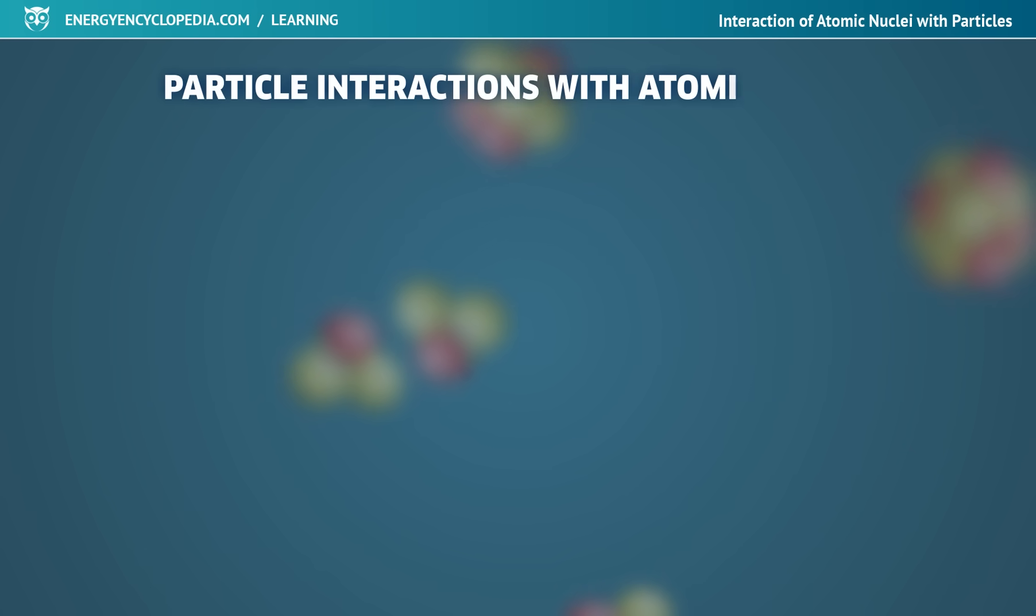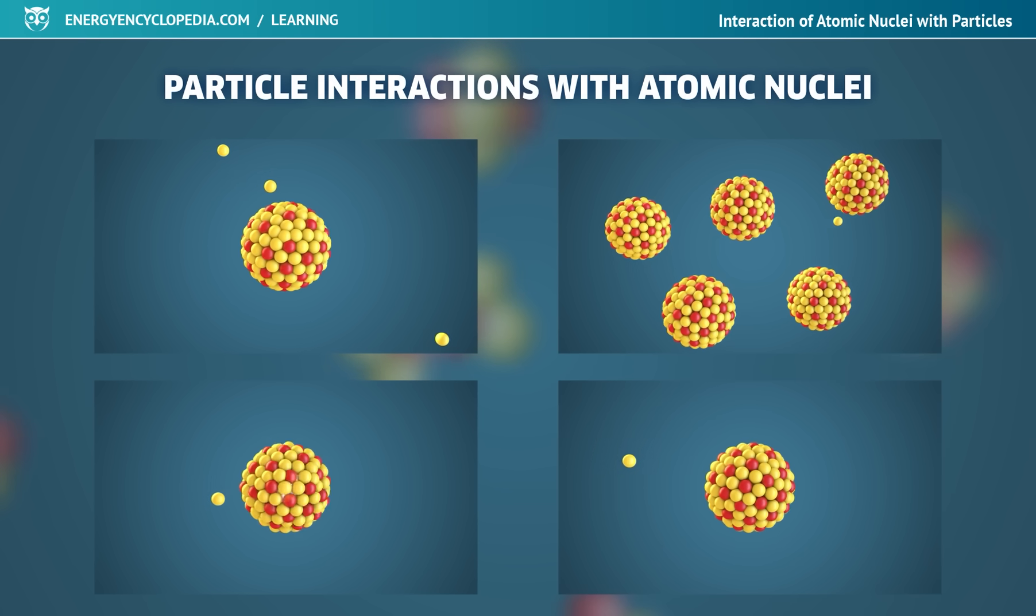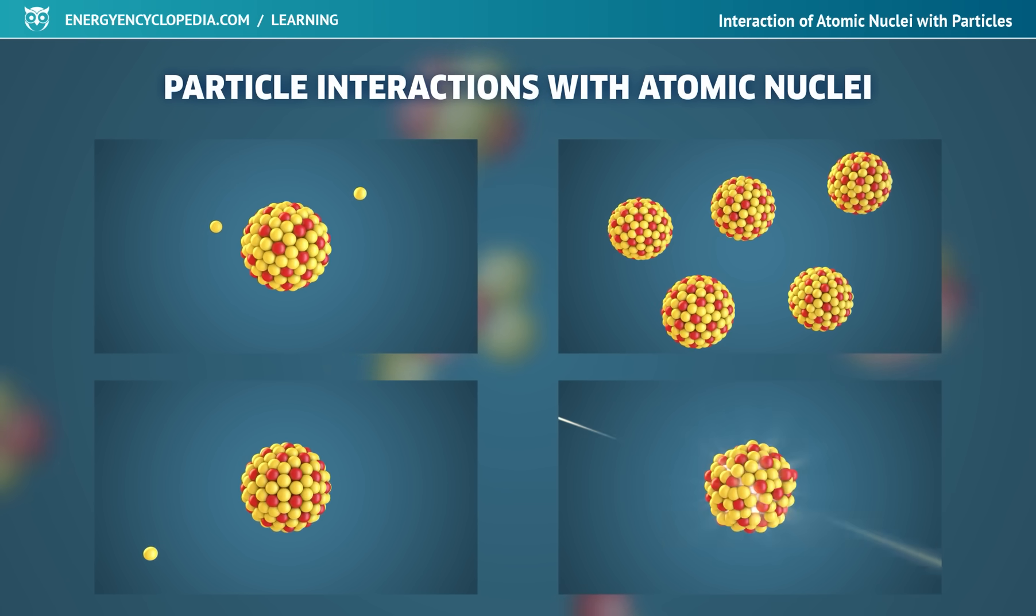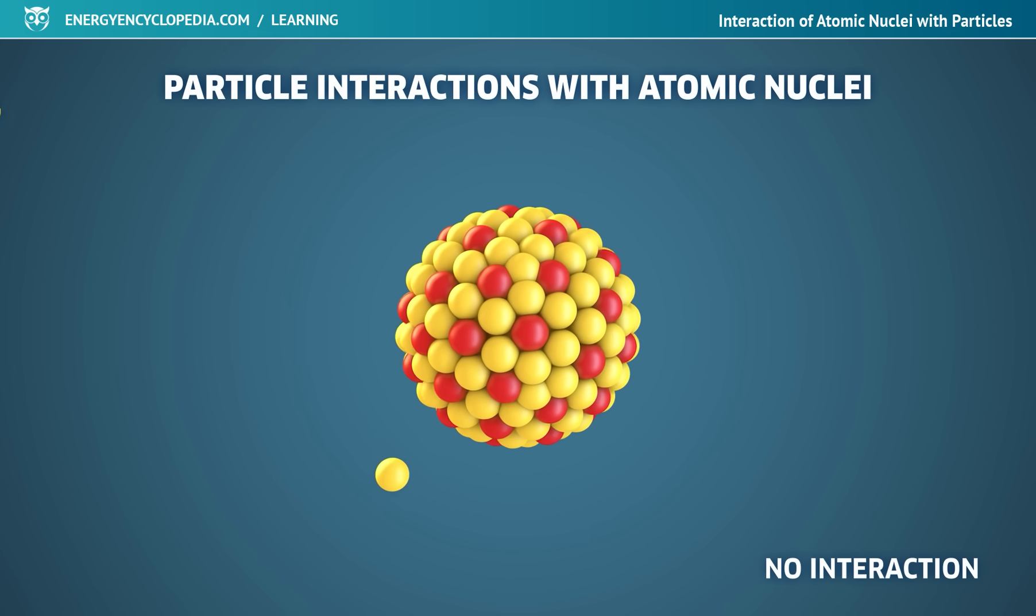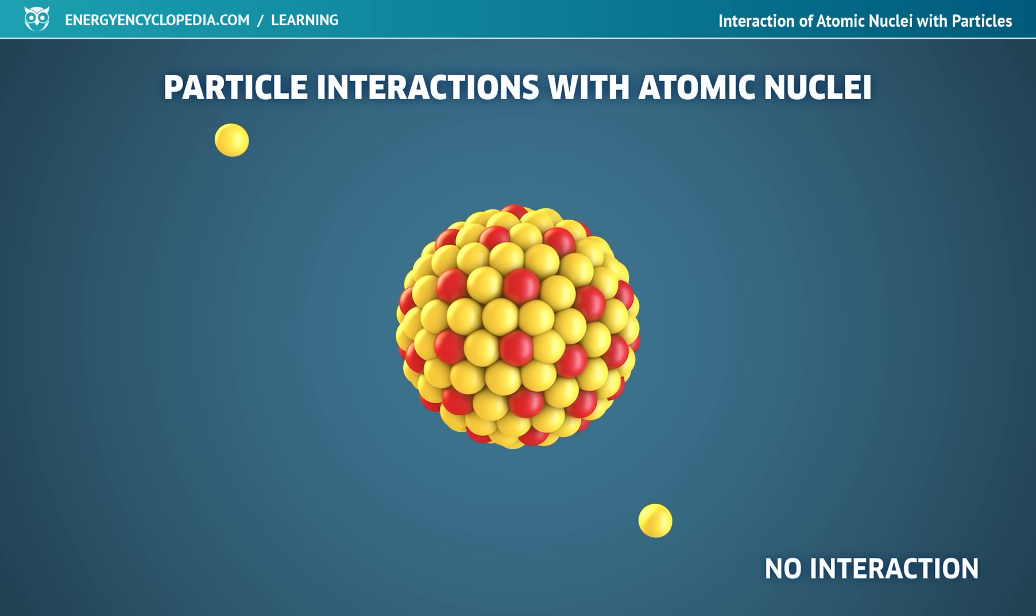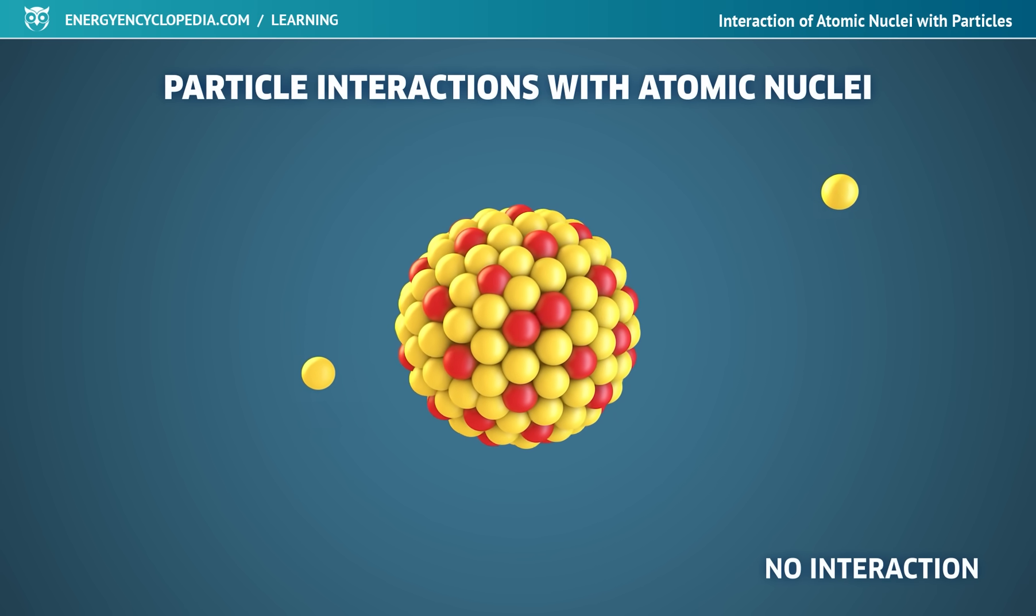Depending on the kind of kinetic energy and the particle, there are several ways for it to interact with the nucleus. If the particle moves only near the nucleus, the nuclear force does not act on it and there is no interaction. The particle just flies past the nucleus without its movement being significantly affected by the force of the nucleus.